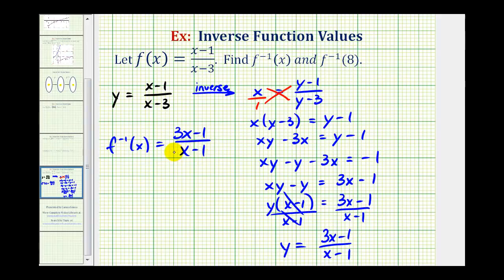Now that we have the inverse function, we can determine f^(-1)(8). f^(-1)(8) = (3(8) - 1)/(8 - 1).